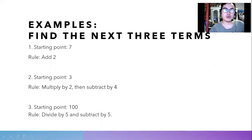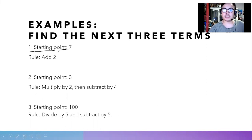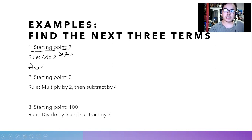What we're going to do is find the next three terms. Our first step is to denote the starting point, which is a sub zero — you can use any letter. Then we state a sub n plus one, also known as the general term for the given sequence.